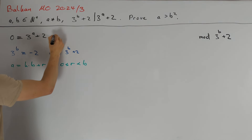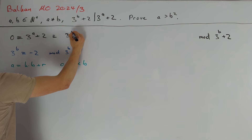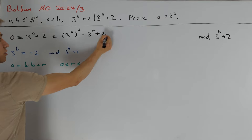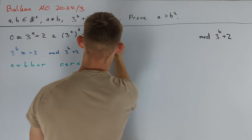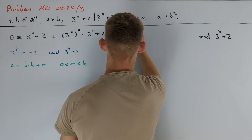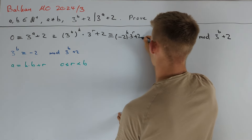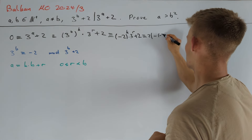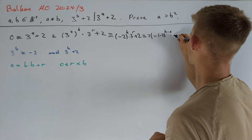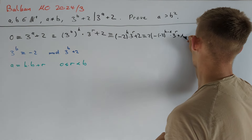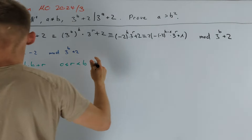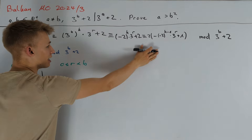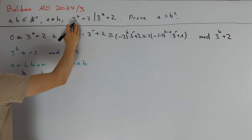We can rewrite 3 to the power of a as 3 to the power of b, all to the power of k, times 3 to the power of r, plus 2. Using our congruence, this becomes minus 2 to the power of k times 3 to the power of r plus 2. Factoring out a 2, we get this is congruent to 2 times the quantity minus 2 to the power of k minus 1 times 3 to the power of r plus 1. This gives a divisibility condition where 3 to the power of b plus 2 divides the right-hand side, and we can remove the factor of 2 since 3 to the power of b plus 2 is odd.